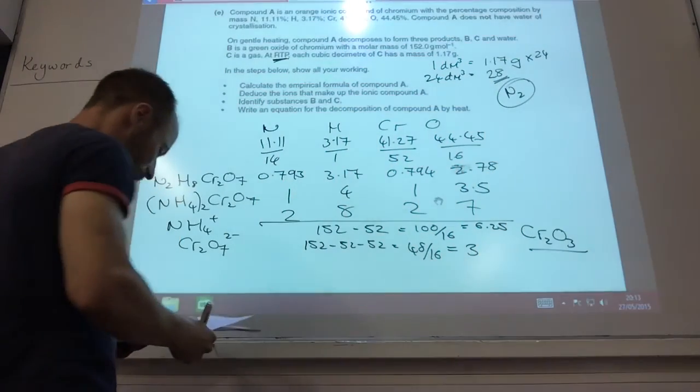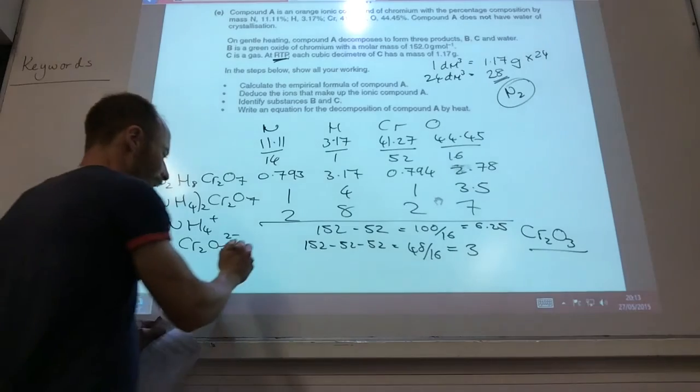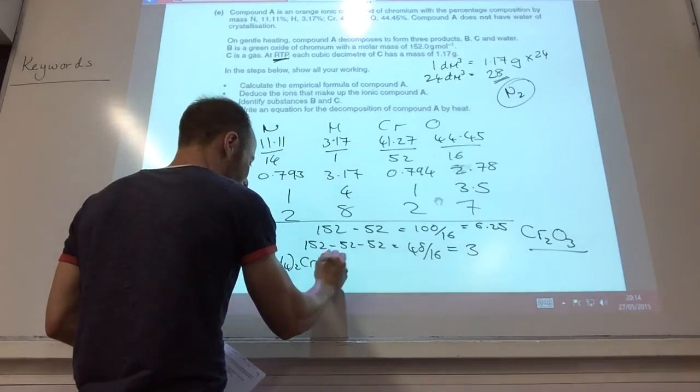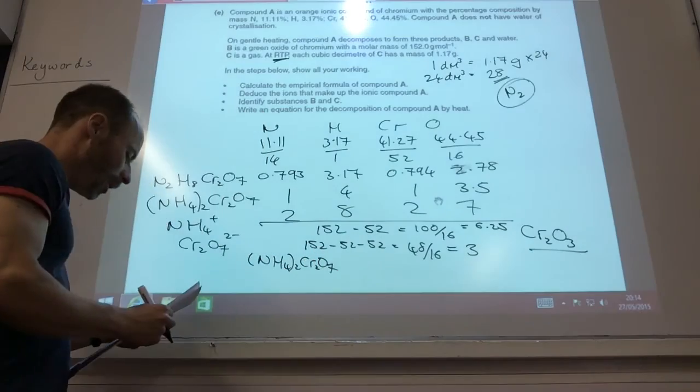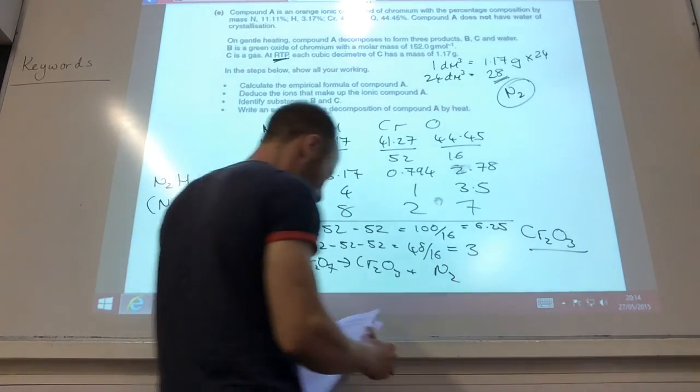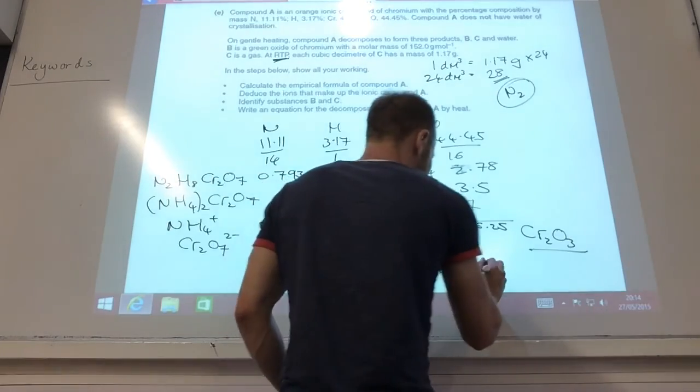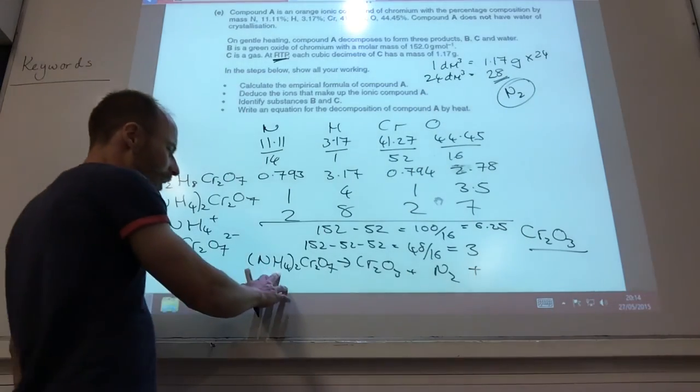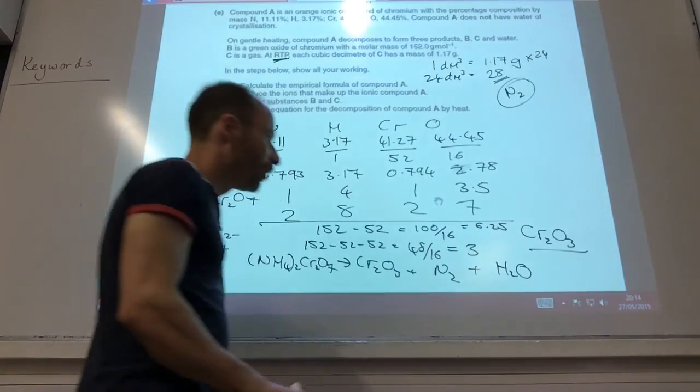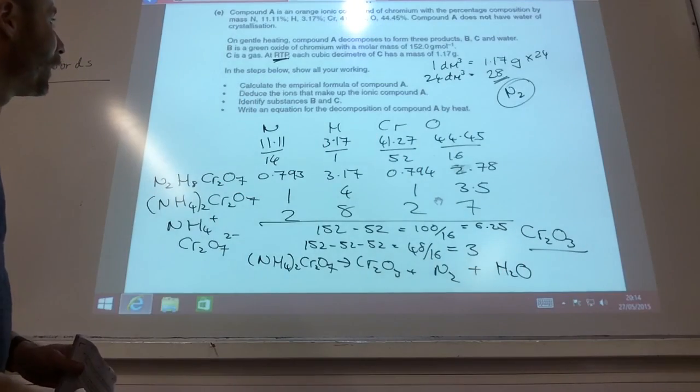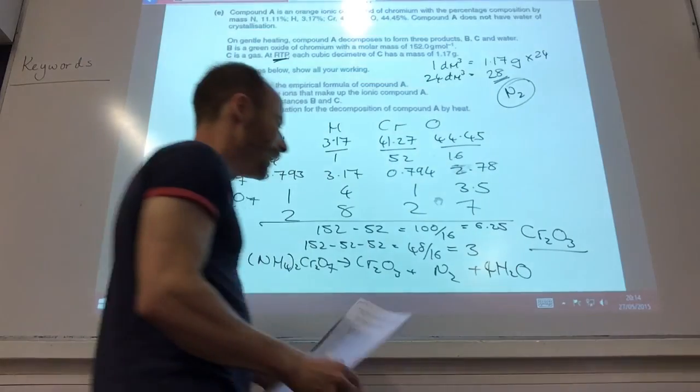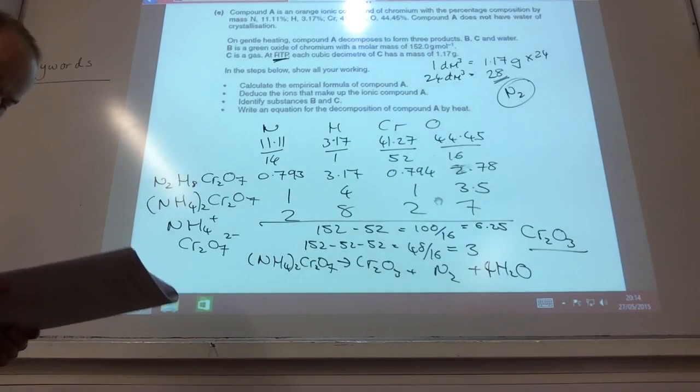And then, finally, your equation. Well, you start off with your ammonium dichromate. You know your oxide. You know your gas is nitrogen. What are you left over with? Well, you're left over with some hydrogen and some oxygen. So probably water as well. And then you need to balance that. And to balance that, you need four water molecules.